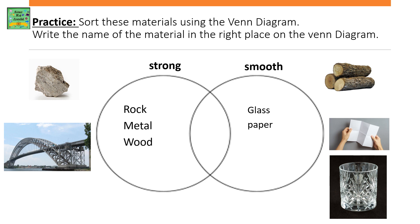Strong: rock, metal, wood. Smooth: glass, paper.